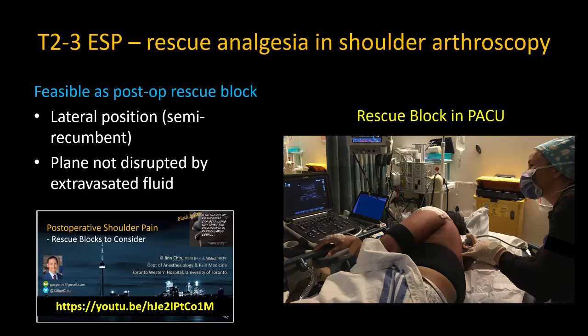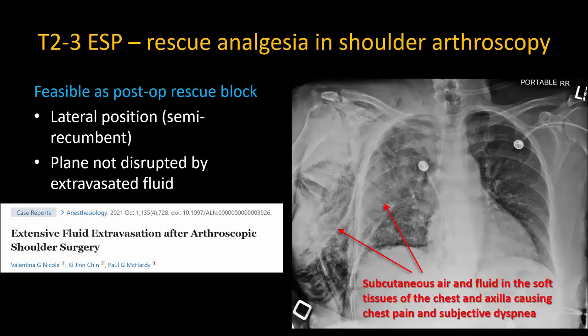I've covered this technique in more detail in another video presentation available on YouTube. A recent case report published in Anesthesiology illustrates a rather extreme example of this clinical scenario. The patient had extensive air and fluid extravasation in her soft tissues after a three-hour arthroscopic shoulder surgery and complained of chest pain and dyspnea in the PACU. After ruling out pneumothorax with a chest x-ray, an ESP block was performed, which relieved her symptoms completely.